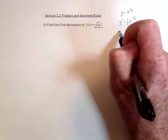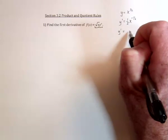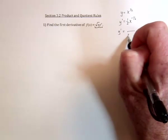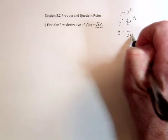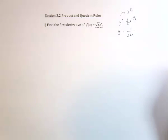But you should never leave negative exponents. So this needs to be moved to the bottom, so it's going to be 1 over 2 square root of x.